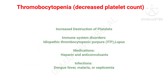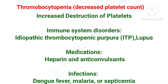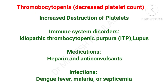The destruction of platelets will also lead to thrombocytopenia. Immune disorders like idiopathic thrombocytopenic purpura and lupus may cause thrombocytopenia. Certain medications like heparin and anticonvulsants will lead to thrombocytopenia. The most common infection leading to thrombocytopenia is dengue fever. In malaria and septicemia, we can also observe destruction of platelets leading to thrombocytopenia.